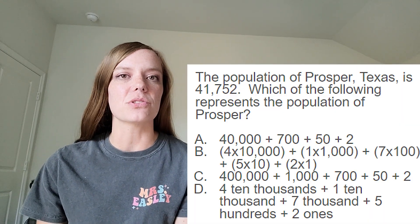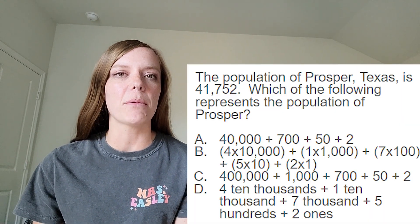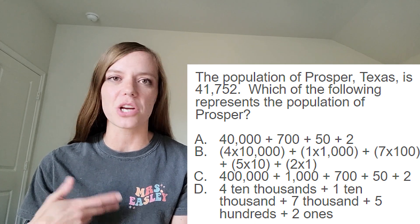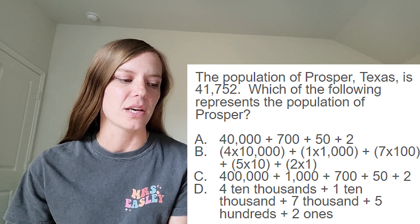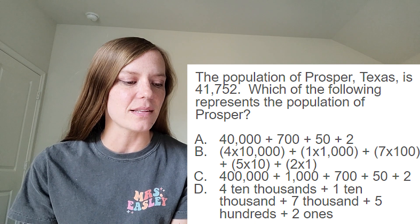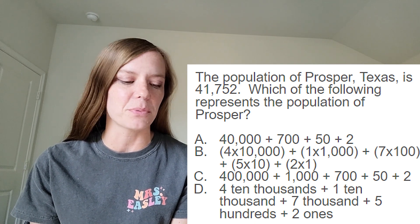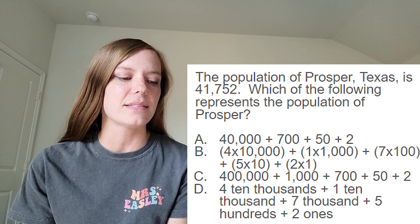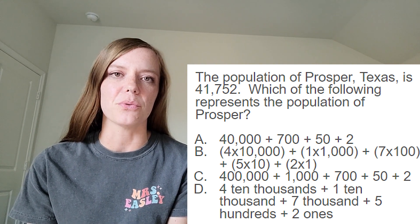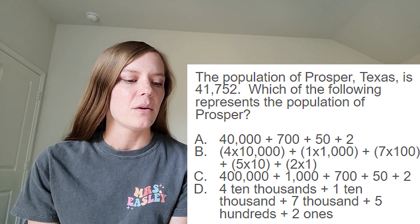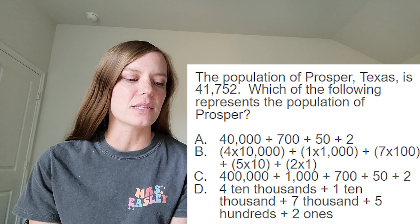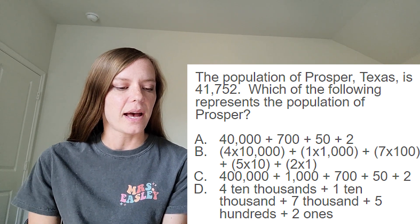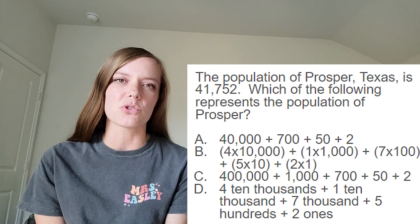So first I like to just read the problem out once. Before I start working with the numbers, I just like to understand what it's about first. So this one today says that the population of Prosper, Texas is 41,752. Which of the following represents the population of Prosper? So it looks like I have different types of answer choices.